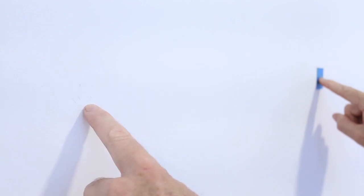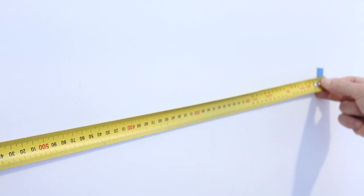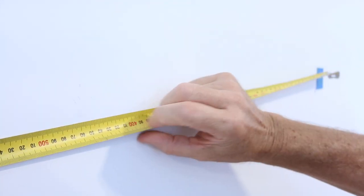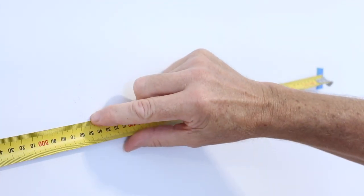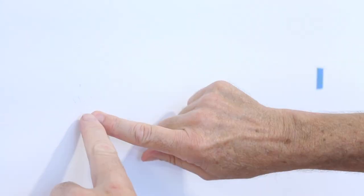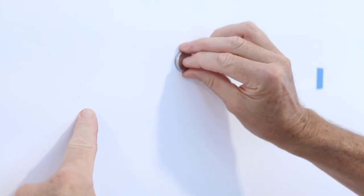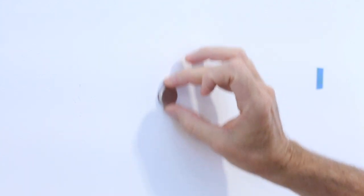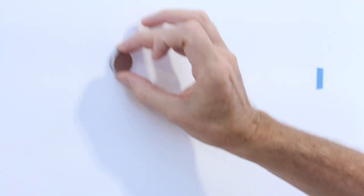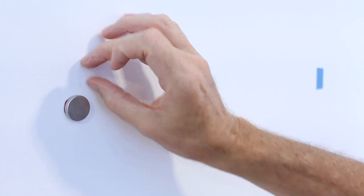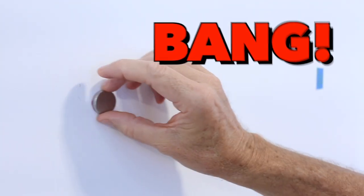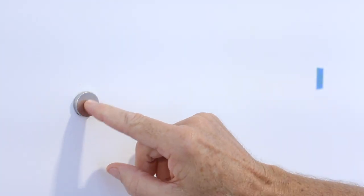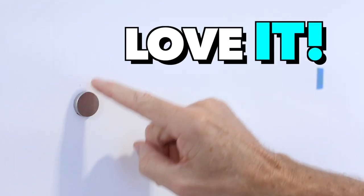So by rights, from this stud here, if we come across 450 millimeters, or 16 inches, we should find ourselves another stud. So if we can just roughly do that, we go across our 450, or 16 inches, which is about there, and now we'll get our fancy magnetic stud finder, up and down the wall, just like that, and bang. We've found ourselves another stud.